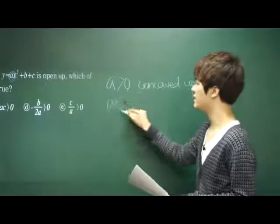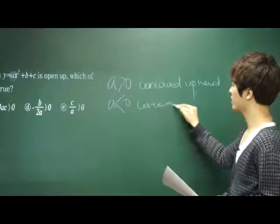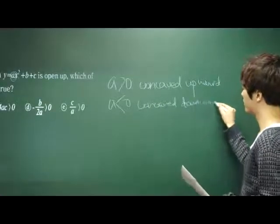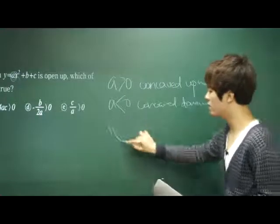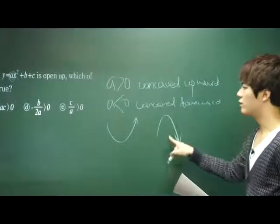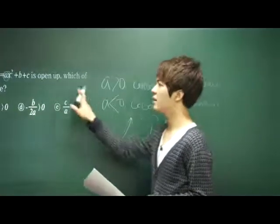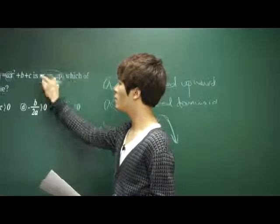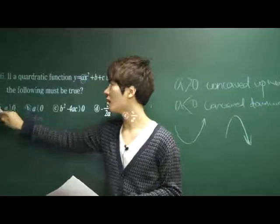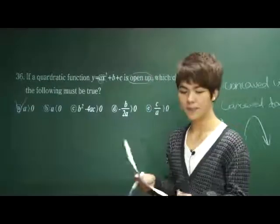If a is less than zero, then it means it is concave downward. So concave upward means the graph looks like a U-shape, and concave downward means the graph opens downward. In this case, the quadratic function is open up — in other words, it is concave upward. Therefore, a must be greater than zero, and the right answer is A.